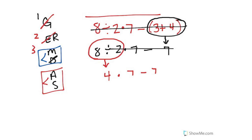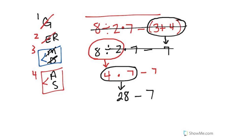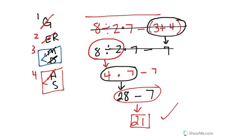Bring down what you haven't touched — the times, the 7, the minus, and the 7. Now what's next? Multiplication or division — and germ desks tells us multiplication comes next. So 4 times 7 is 28. Bring down what you haven't used — the minus and the 7. The last step is addition or subtraction, whichever you see first. I don't have any addition, so I just do subtraction. 28 minus 7 is 21. That is my final answer.